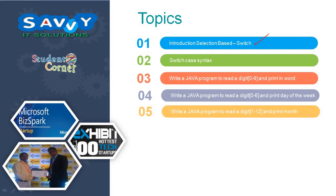The second topic is switch case syntax. Third, we will write a Java program to read a digit 0 to 9 and print in word. Then write a Java program to read a digit 0 to 6 and print the day of the week. And write a Java program to read a digit 1 to 12 and print the name of the month.